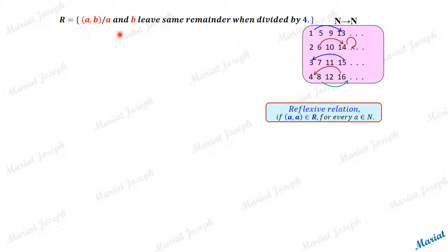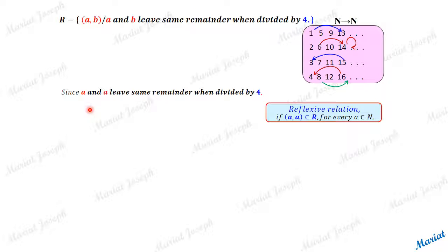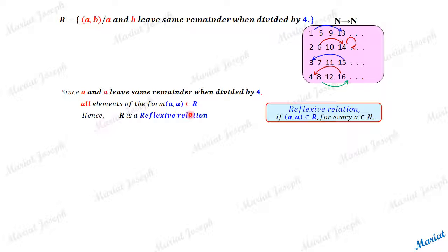Let's see whether this relation is reflexive. For reflexivity, pairs of the form (a, a) should belong to R for every a in N. Since a and a always leave the same remainder when divided by 4, (a, a) belongs to R for all a. The relation satisfies the definition of reflexivity, so it is a reflexive relation.